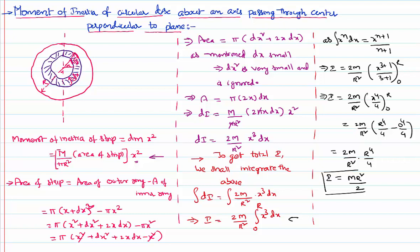Thus, the moment of inertia of a circular disk about an axis passing through the center, perpendicular to the plane, is equal to MR squared divided by 2. Once you know this, about other different symmetrical axes you can calculate the moment of inertia using the parallel axis theorem and the perpendicular axis theorem. Thank you for watching, keep coming back for more video lessons. Thank you.